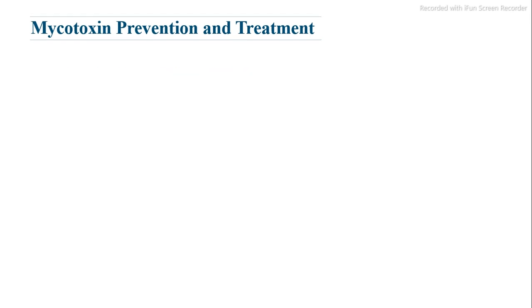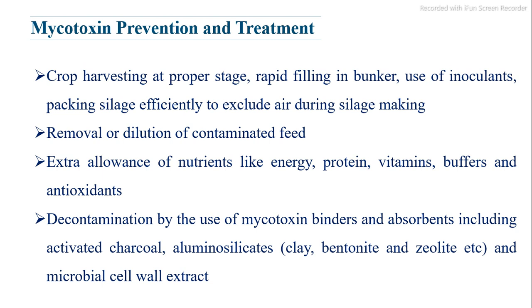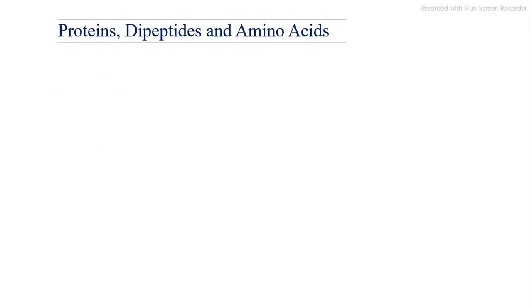Additional prevention and treatment measures include: crop harvesting at proper stage, rapid filling in bunkers, use of inoculants, packing silage efficiently to exclude air, removal or dilution of contaminated feed, extra allowance of nutrients like energy, protein, vitamins, buffers, and antioxidants. Decontamination can be achieved using mycotoxin binders and absorbents including activated charcoal, aluminosilicates, clay, bentonite, zeolite, and microbial cell wall extracts.